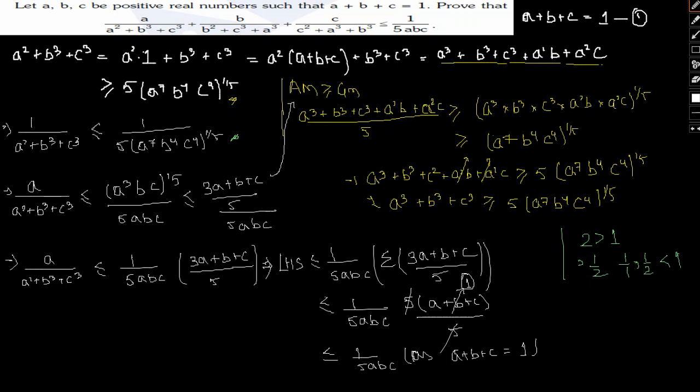So hopefully this is clear — how we went about solving this problem. Our primary tool was AM ≥ GM, arithmetic mean is greater than or equal to geometric mean. Please go through it yourself for a better understanding. Thank you so much.